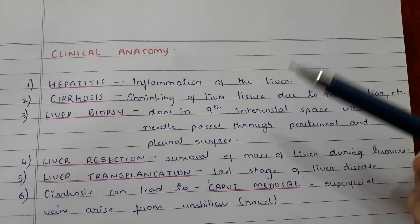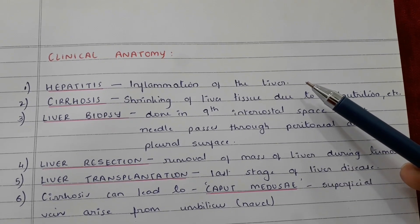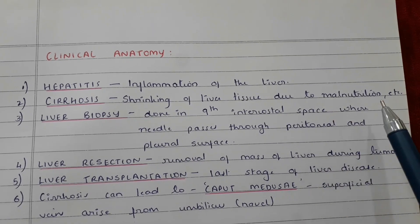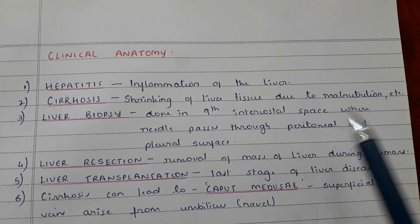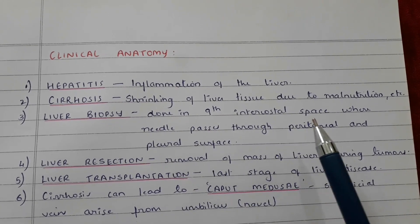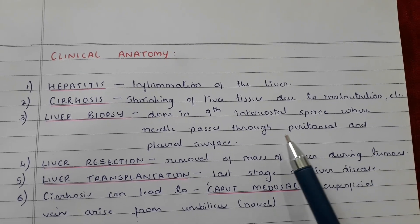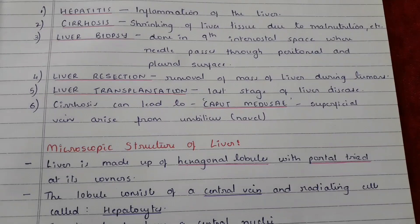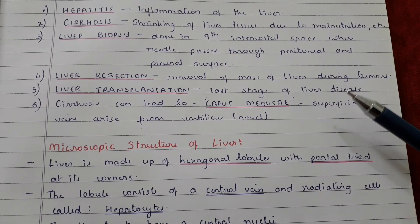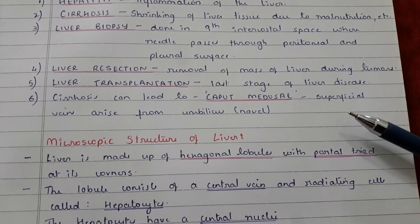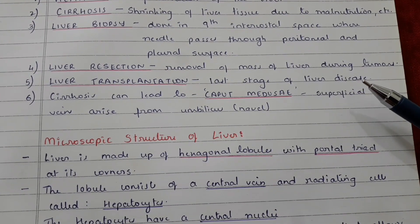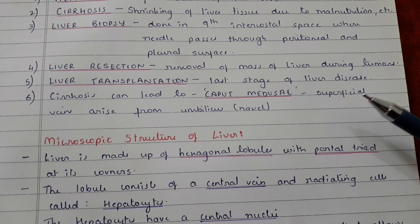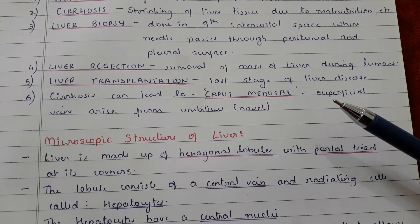Clinical anatomy of the liver: hepatitis means inflammation of the liver. Cirrhosis is the shrinking of liver tissue due to malnutrition etc. Liver biopsy is done in the ninth intercostal space, where the needle passes through the peritoneal and pleural surface. Liver resection is the removal of a mass of liver during tumors. Liver transplantation is done in the last stage of liver disease. Cirrhosis can lead to caput medusae, wherein superficial veins arise from the umbilical area.